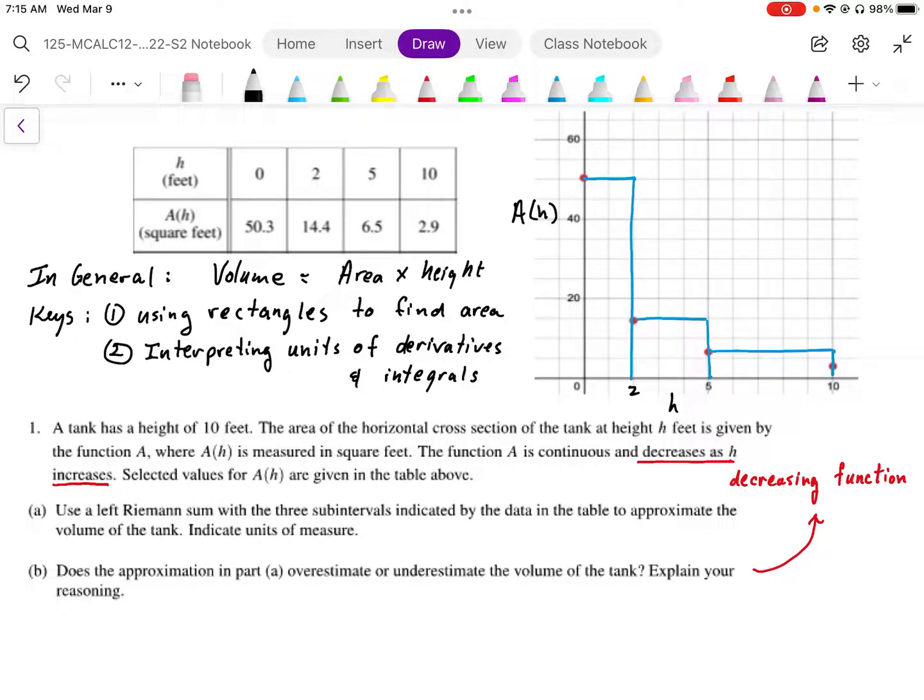We need to calculate the individual rectangular areas. The first rectangle is 50.3 with a width of 2, so we get 100.6. The second rectangle has a width of 3 and a height of 14.4, so we get 43.2.